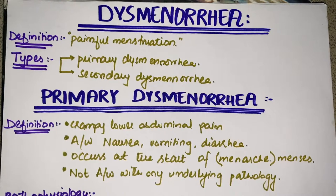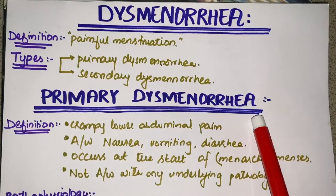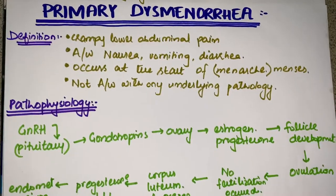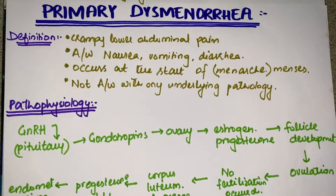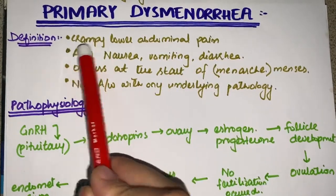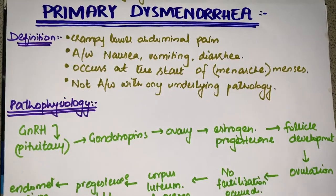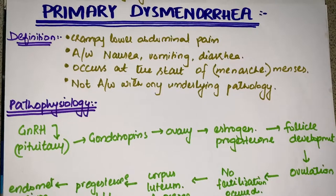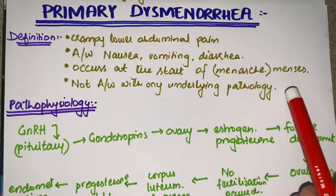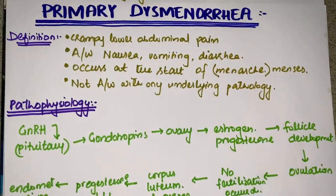Now focusing on primary dysmenorrhea: it is a crampy lower abdominal pain associated with nausea, vomiting, and diarrhea. It starts when the female begins menstruating, around the time of menarche. Very importantly, primary dysmenorrhea is not associated with any underlying pathology — that is what distinguishes it from secondary dysmenorrhea.